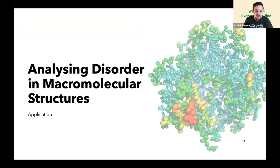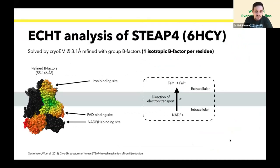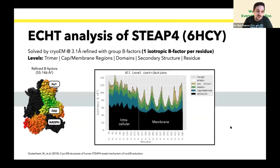So I'll show you a couple of examples. This is a cryo-EM structure solved at 3.1 angstrom. It was refined with group B-factors, so for every residue, you give one isotropic B-factor to every atom in the residue. This is a reducing protein that takes an NADPH that binds here and transfers an electron to reduce iron 3 to iron 2 extracellularly for uptake.